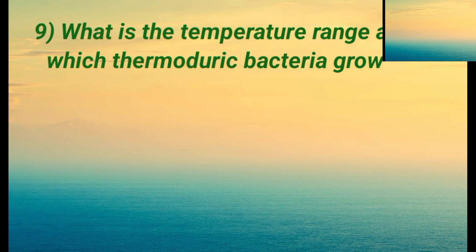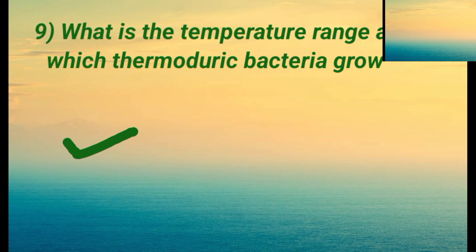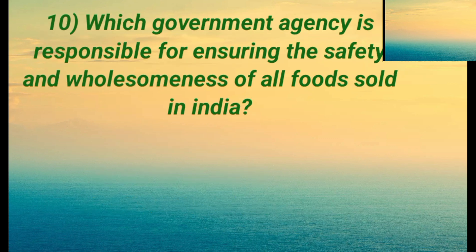Question nine: what is the temperature range at which thermotrophic bacteria grow? Option A is 60°C to 75°C. Option B is 6.0°C to 22°C. Option C is 27°C to 40°C. Option D is all of the above. The right answer is B: 6.0 to 22.0 degrees Celsius.